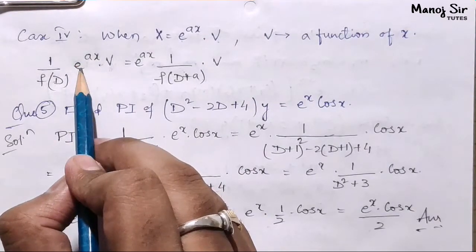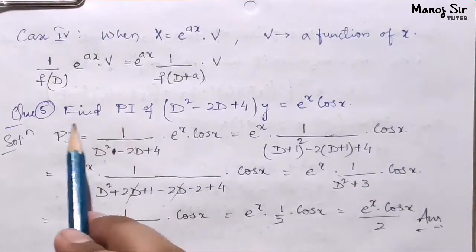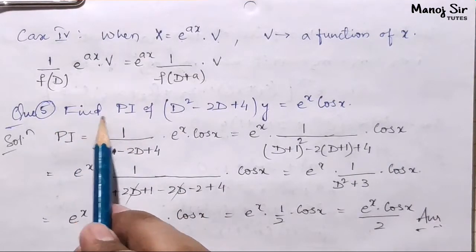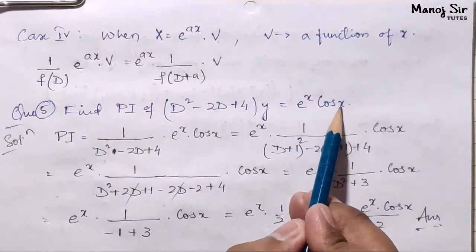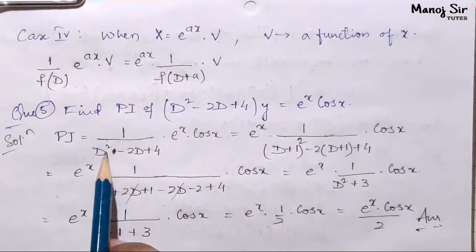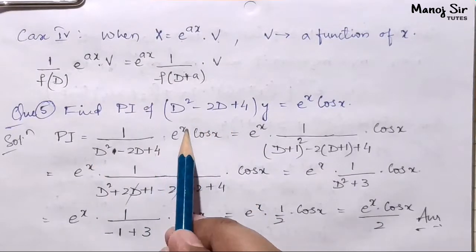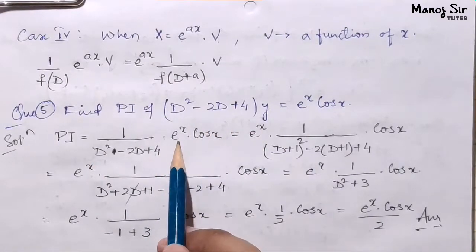PI equals 1/(D² - 2D + 4) times e^x cos x. Since it is in combination form, we replace D with D plus 1. Why 1? Because the coefficient of x is 1.